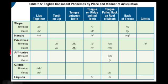On the left side you have the different types of consonant phonemes. Across the top you have the place of articulation — where your lips, teeth, or tongue are when you're saying that phoneme sound.